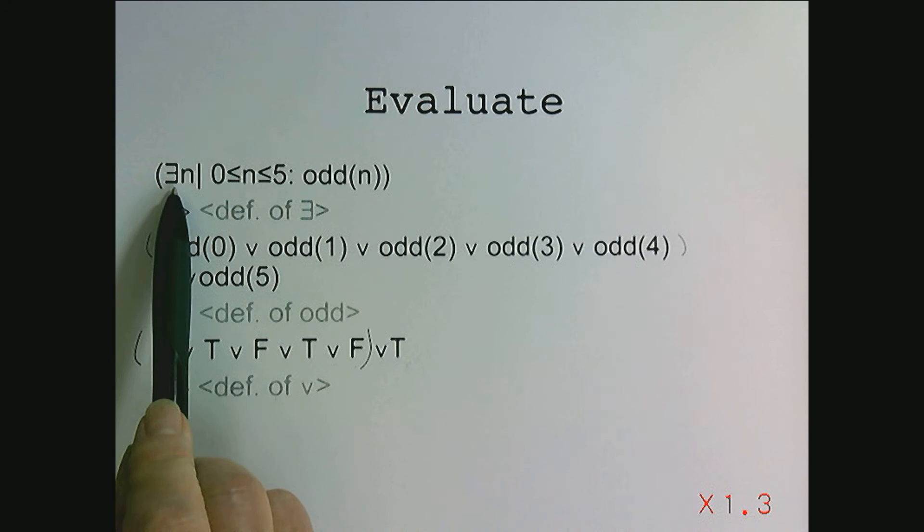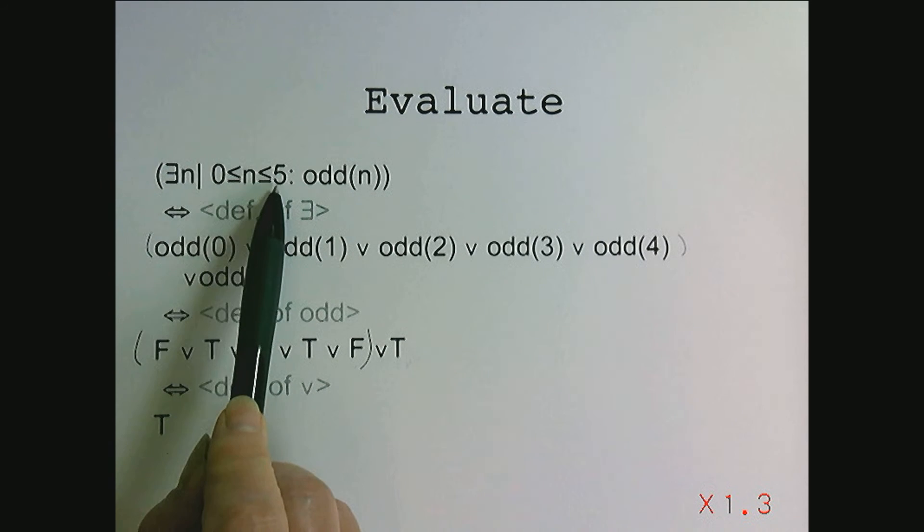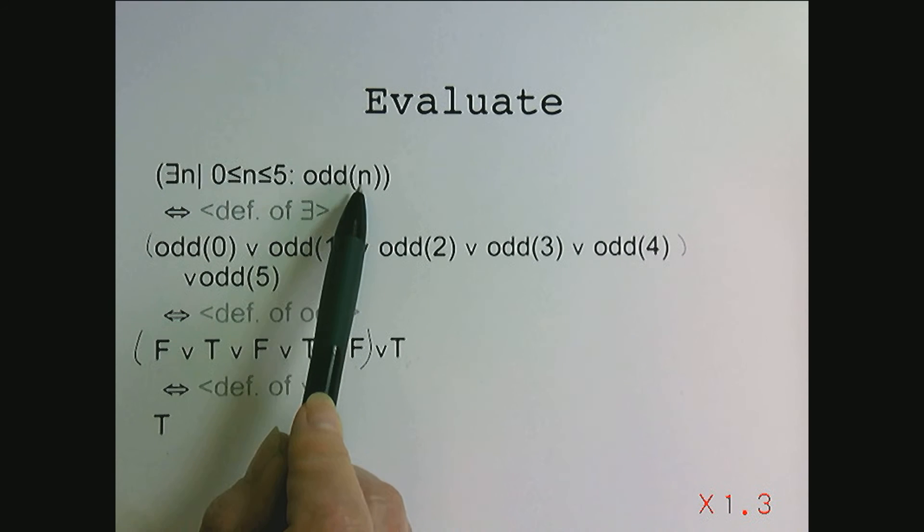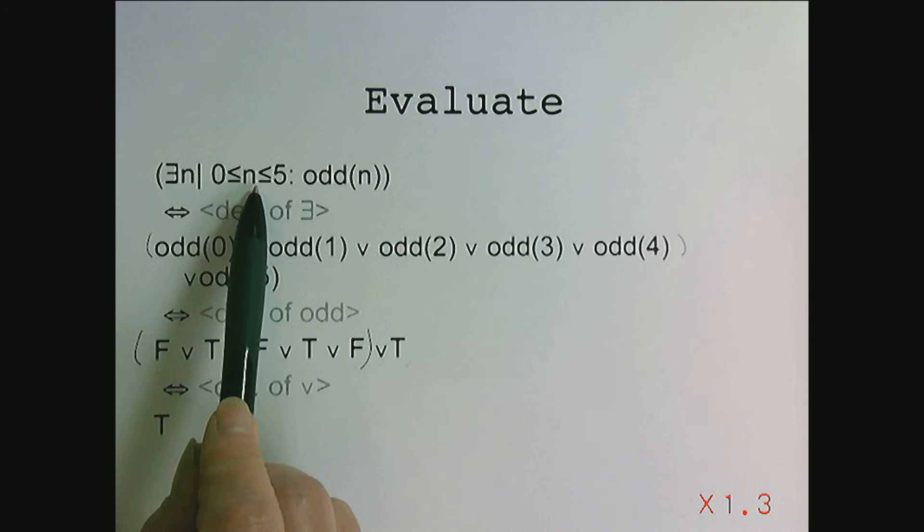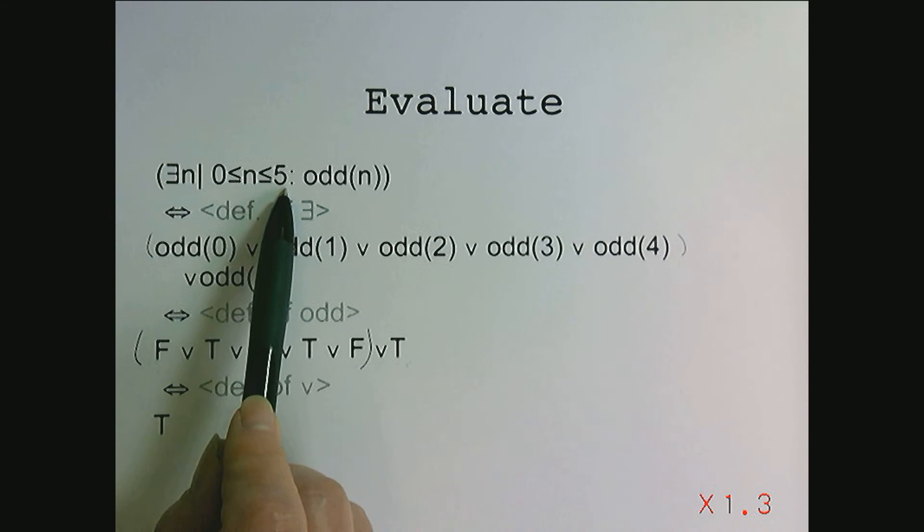Let's say we wanted to evaluate there exists an n, n in the range of 0 to 5, including 0 and 5, odd n. So this is actually saying that there is an integer between 0 and 5, including the endpoints, that's odd.